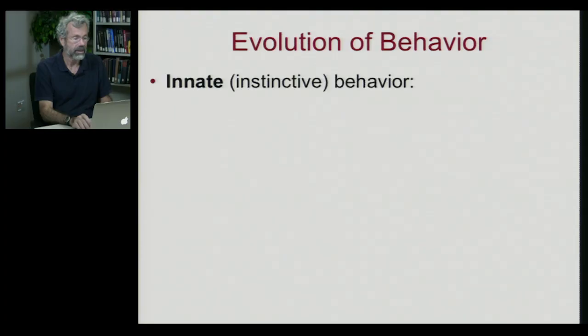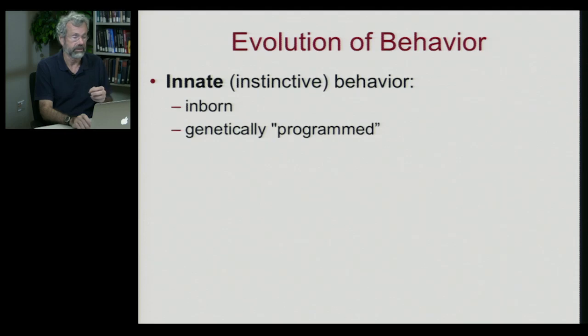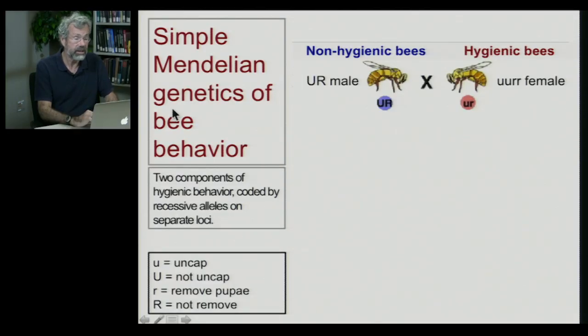Today we're going to look at the evolution of cooperation. But when thinking about behavioral adaptations, there are certain things we need to keep in mind about the evolution of behavior. Many behaviors are innate — they're instinctive, inborn, genetically programmed, and difficult to alter. Behavior is more generally hardwired in simple organisms like insects. We'll start with an outline of some very interesting behaviors shown by bees, and we can use Mendelian genetics to see just how programmed these behaviors are.